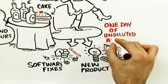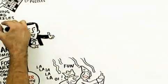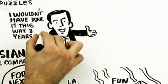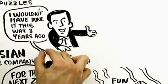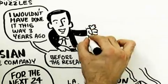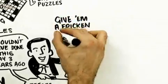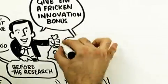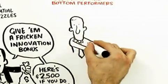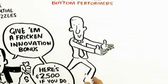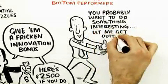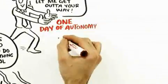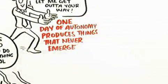One day. Now this is not an if-then incentive. This is not the sort of thing that I would have done three years ago before I knew this research. I would have said, 'You want people to be creative and innovative? Give them a freaking innovation bonus. If you can do something cool, I'll give you $2,500.' They're not doing this at all. They're essentially saying, 'You probably want to do something interesting. Let me just get out of your way.' One day of autonomy produces things that have never emerged.